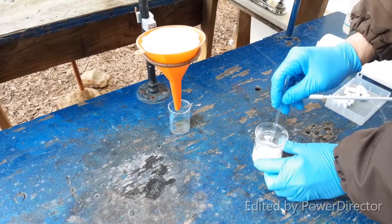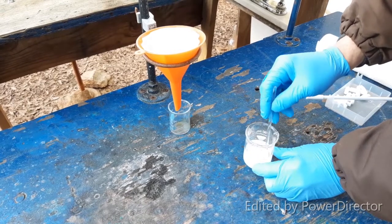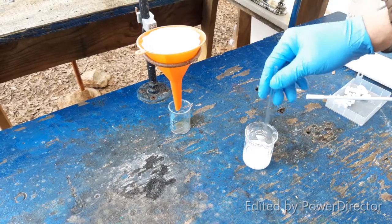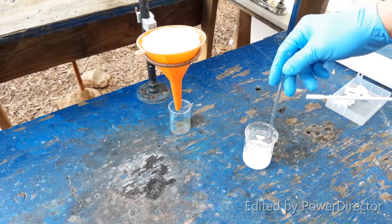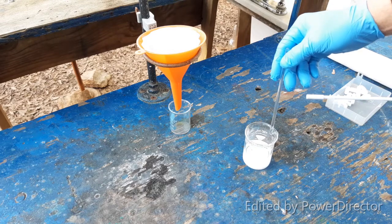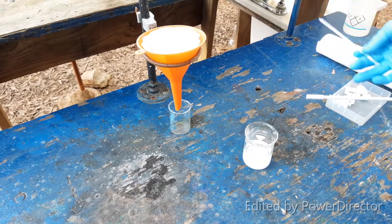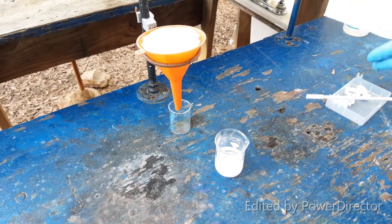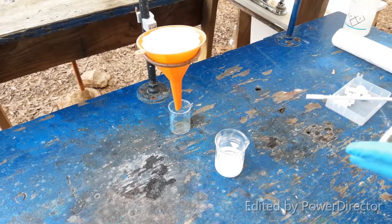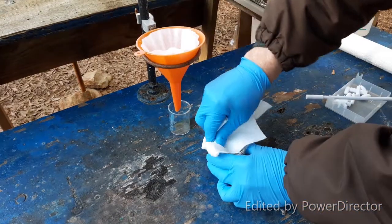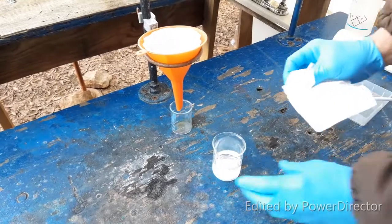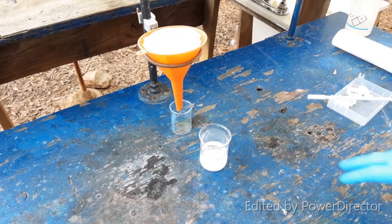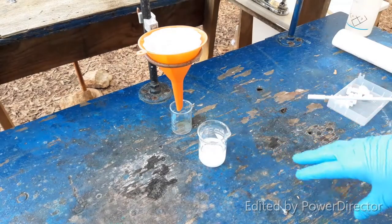All right, so now we're going to filter our beautiful death crystals here and break that up with the glass rod. Mercuric chloride, its old name is corrosive sublimate, and I can only gather that's because it is corrosive based on some of the stuff that I've read.